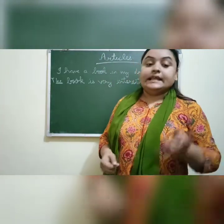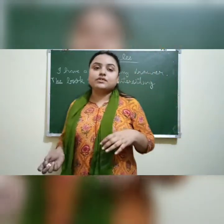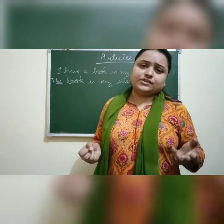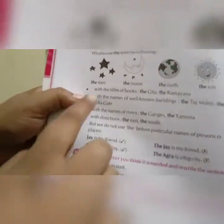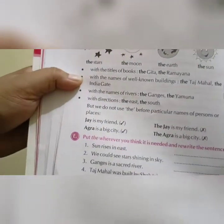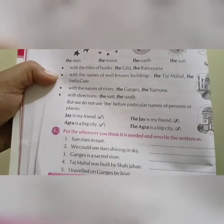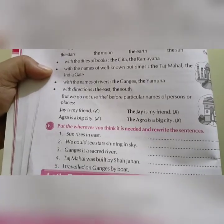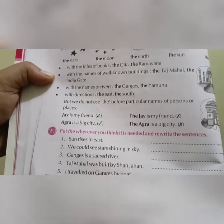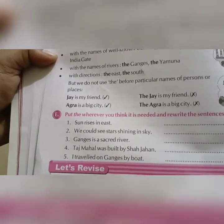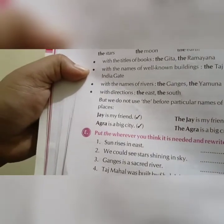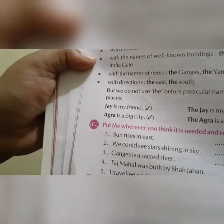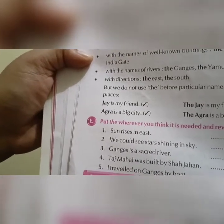Next thing: THE is used with the name of rivers, mountains, etc. THE can be used with titles of books — the Gita, the Ramayana; with names of well-known buildings — the Taj Mahal, the Red Fort, the India Gate; with names of rivers — the Ganga, the Yamuna; and with directions — the North, the South, the East.